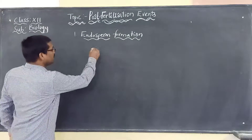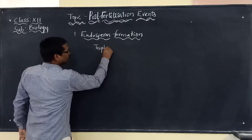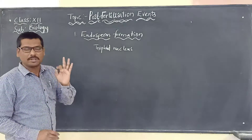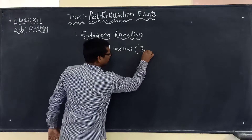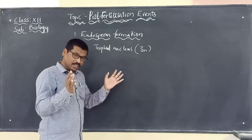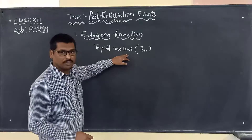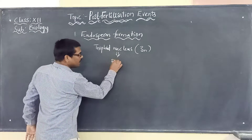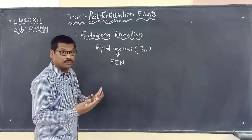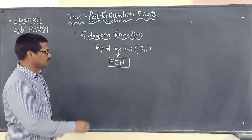Endosperm is formed from the triploid nucleus. This triploid nucleus is called the primary endosperm nucleus — triploid, or 3N — because it is made up of two polar nuclei and one male gamete fused together, which we call vegetative fertilization. So endosperm is formed from the primary endosperm nucleus.